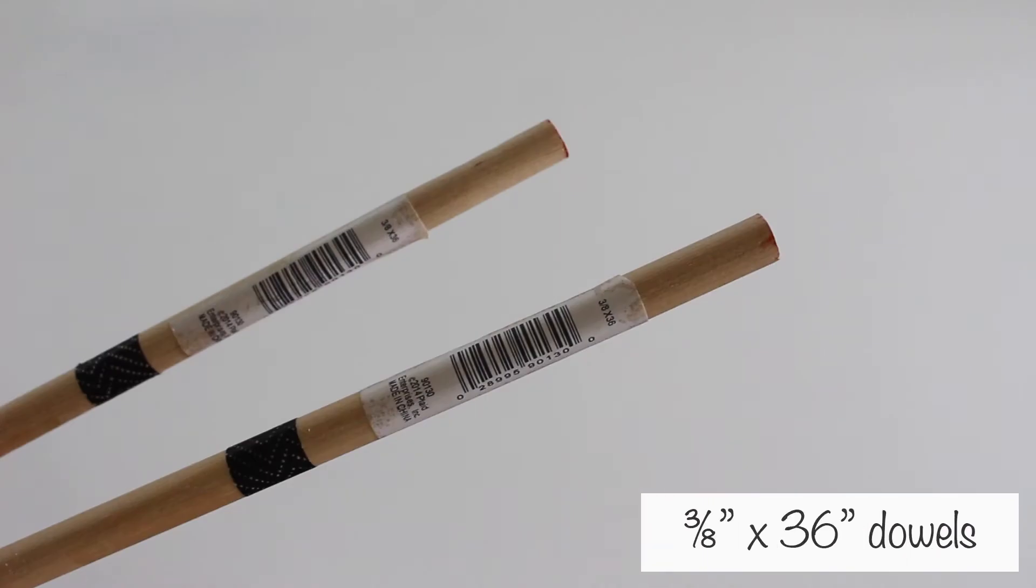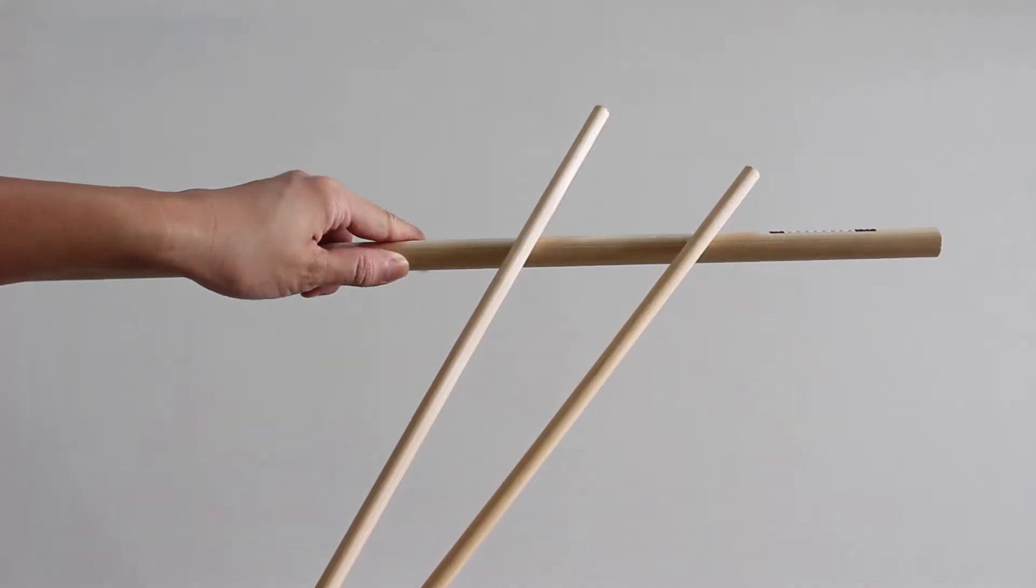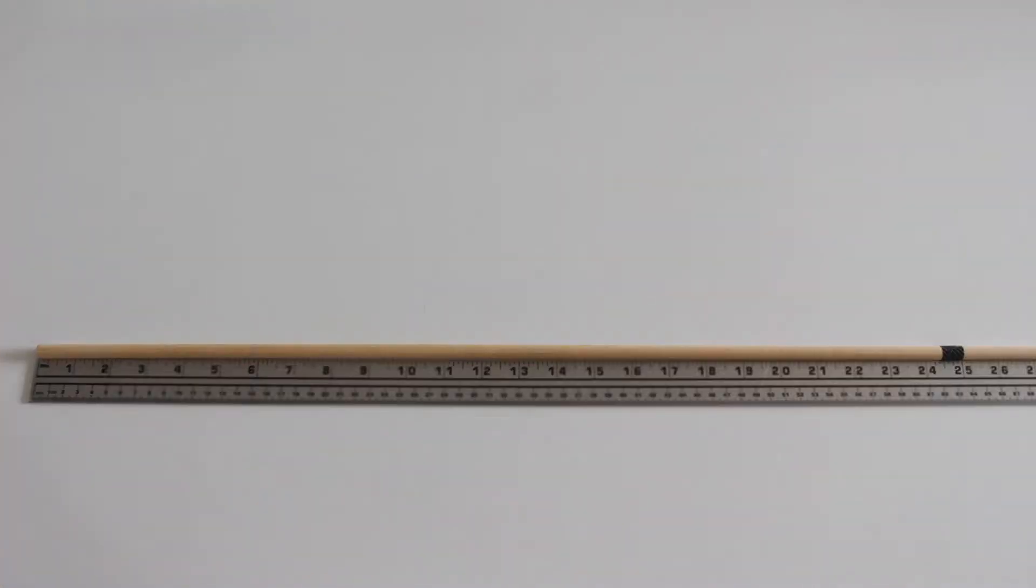For the branches, I used 3/8 of an inch by 36 inch dowels. I probably should have used thinner ones so that I could have had smaller holes in the tree trunk.